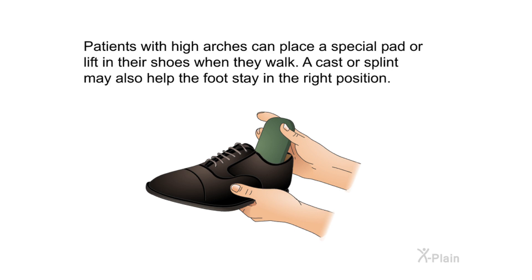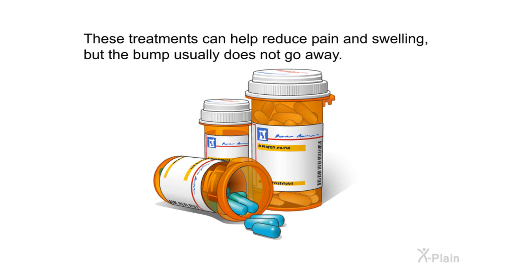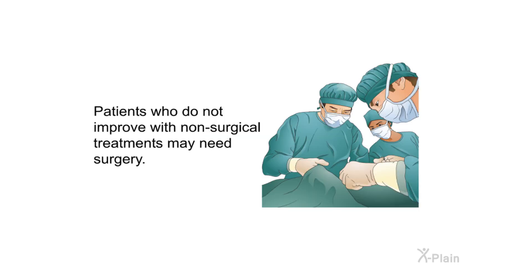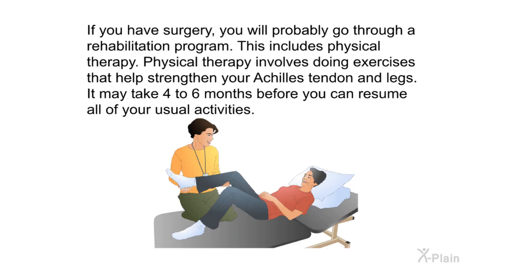Patients with high arches can place a special pad or lift in their shoes. A cast or splint may also help the foot stay in the right position. These treatments can help reduce pain and swelling, but the bump usually does not go away. Patients who do not improve with non-surgical treatments may need surgery. If you have surgery, you will probably go through a rehabilitation program including physical therapy, which involves exercises that strengthen your Achilles tendon and legs. It may take four to six months before you can resume all of your usual activities.